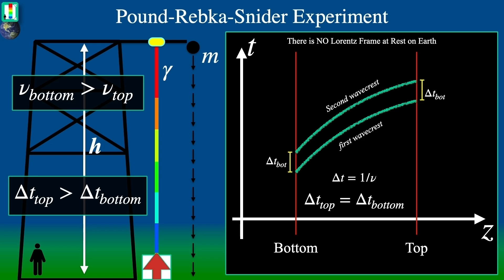However, from both the heuristic arguments and Pound, Rebka, and Snyder's work, we see conclusively that the frequency shift up to the top of the tower means that the wave crests have spread out, and that the delta t's must change. Therefore, special relativity and Lorentz frames do not apply to the Earth or to any location with a uniform gravitational field. They also don't work if we take into account tidal forces from non-uniform fields.